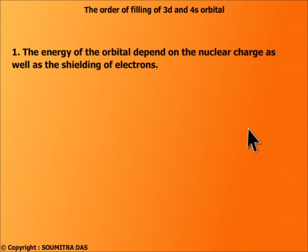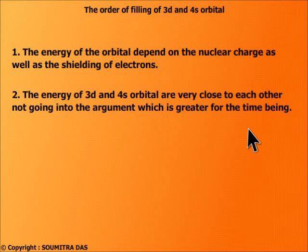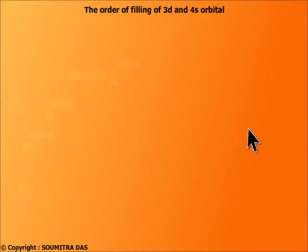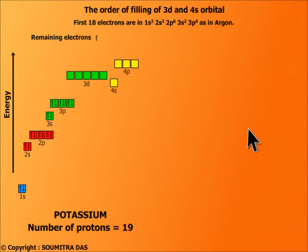The energy of the orbital depends on the nuclear charge as well as the shielding of electrons. The energy of 3d and 4s orbital are very close to each other, not going into the argument which is greater for the time being. Now let me come to the main point.